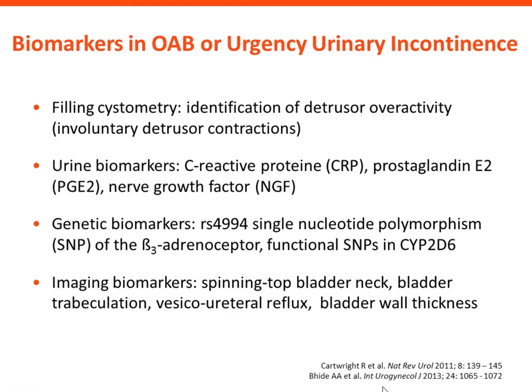And these are genetic biomarkers. Or we have imaging biomarkers like the spinning top bladder neck, bladder trabeculation, vesicoureteral reflux, or bladder wall thickness — enlargement of bladder wall thickness. So these are the biomarkers we can use to prove a disease, detect disease progression, or predict treatment outcome.